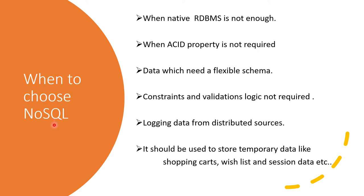When should you choose NoSQL? When native RDBMS is not enough — for example, when you have a dynamic schema requirement. When ACID properties are not required and you want high availability. When you need a flexible schema, when constraints and validation logic are not required, when logging data from distributed sources, or when storing temporary data like shopping carts, wish lists, or sessions where 100% accuracy is not critical but high availability is needed.